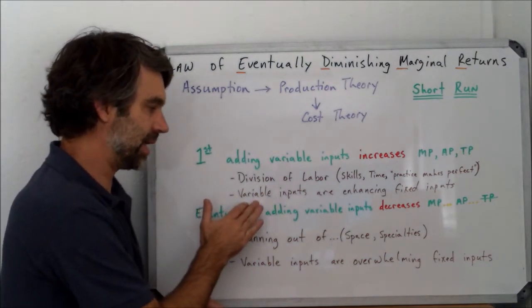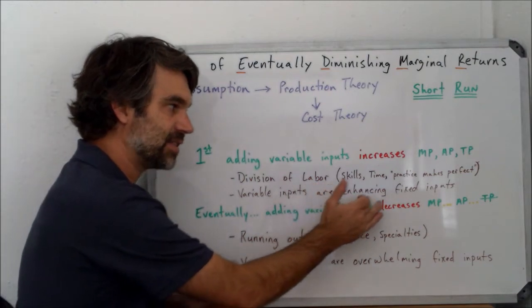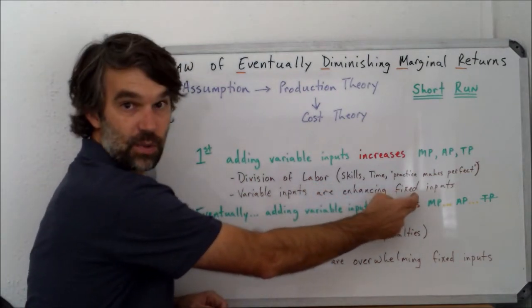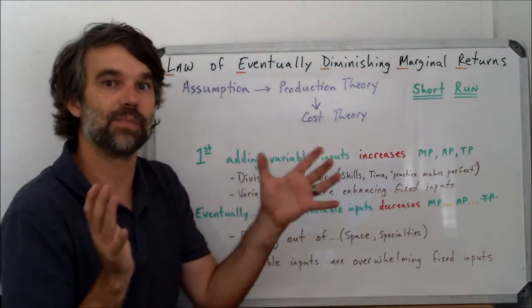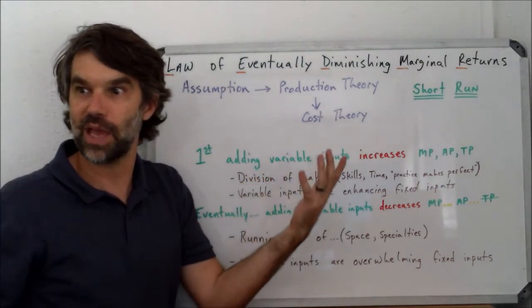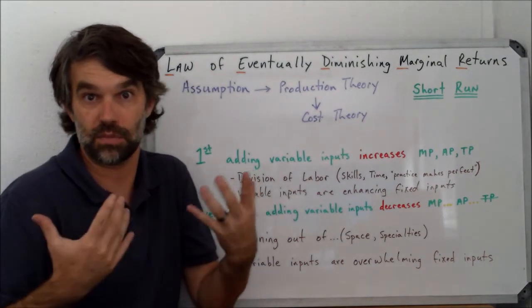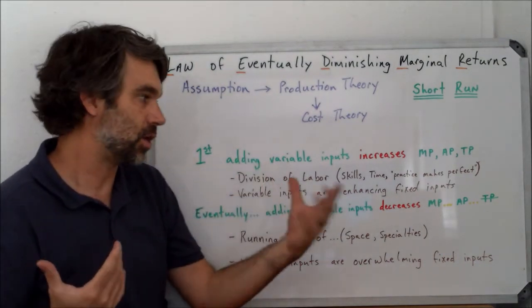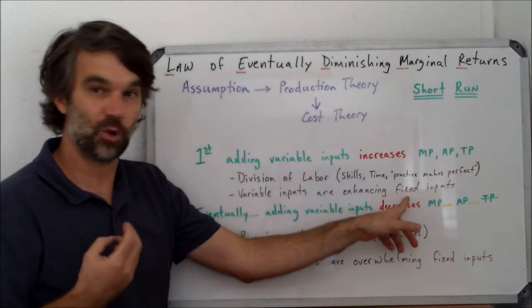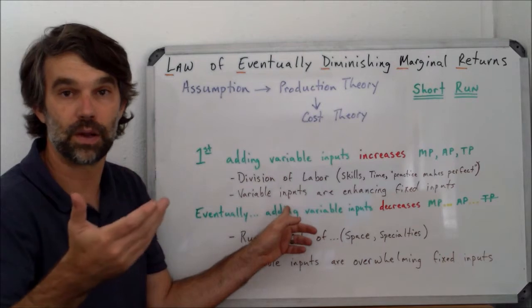So in this case, what's happening is that as I add the variable inputs, it's enhancing the production of the fixed input. Imagine if I had a big bakery and it's just me sitting in it. Well, I have all this space, but I don't need that much space, right? I'm not that big a guy. So the fixed input isn't really being used to its maximum until I start to add more and more people.